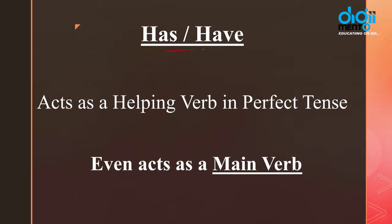Has and have — jaise hum kehte hain — hona, alag alag sentences pe matlab badalta hai. Perfect tense ke case mein hum isse as a helping verb use karte hain. Jo aapne tenses mein sikha ki jab bhi perfect tense hota hai us case mein hamaara jo helping verb hota hai — which is again a past form of has or have — because if we use them as a main verb, then these tenses like first form, second form and third form change. In this video we mainly talk about has, have, had as main verbs.